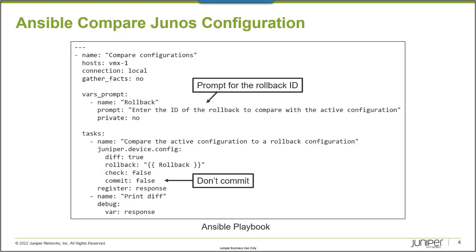This is an example Ansible playbook that I will demonstrate using to perform a diff between the active configuration on a Junos platform and a previous rollback. The user will be prompted to specify the rollback to use for the comparison.